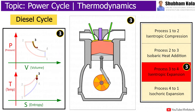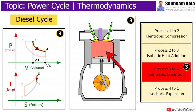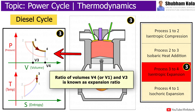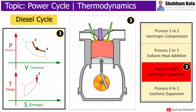Process 3 to 4 is an isentropic expansion process, where gas inside the cylinder expands from volume V3 to V4, which is equal to volume V1. The ratio of volumes V4 (or V1) and volume V3 is known as the expansion ratio. Here, work is done by the gases on the piston, thus powering the engine by pushing the piston down.